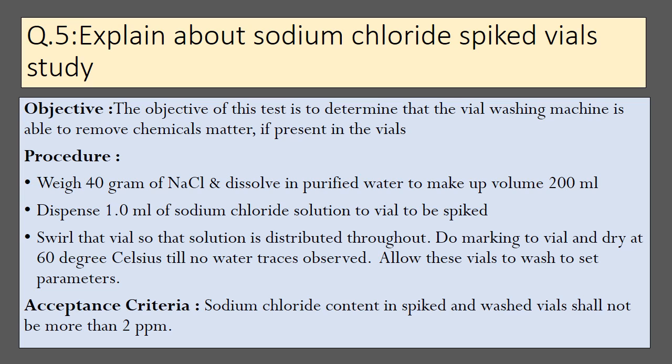In the procedure, weigh 40 grams of sodium chloride and dissolve in purified water to make a volume of 200 ml. Dispense 1 ml of sodium chloride solution into each vial to be spiked. Swirl the vial so that the solution is distributed throughout. Mark the vial and dry at 60°C until no water traces are observed. Allow these vials to wash at set parameters. The acceptance criteria is that sodium chloride content in spiked and washed vials shall not be more than 2 ppm.